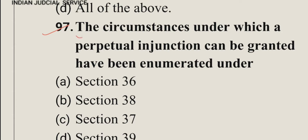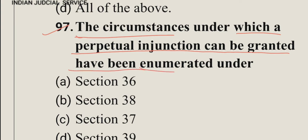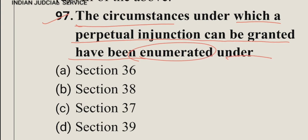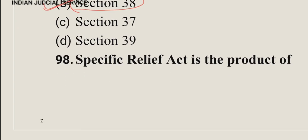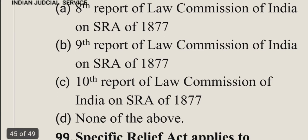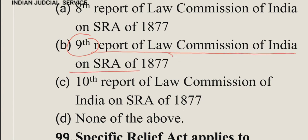Question number 97: The circumstances under which a perpetual injunction can be granted have been enumerated under — perpetual injunction can be granted as enumerated under section 38 of the Specific Relief Act, which is a product of the 9th Report of the Law Commission of India on SRA 1877. The answer is option B.